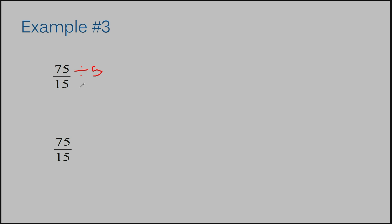We have seventy-five over fifteen. Let's try dividing by five. Seventy-five divided by five is fifteen. Fifteen divided by five is three. So seventy-five over fifteen is equivalent to fifteen over three — because I divided both the numerator and the denominator by five. This is an improper fraction, but that's not really our concern here; our directions told us to find an equivalent fraction, so that's what we did. If your directions were to say to make sure your fraction is in proper form, then you would make sure that it was not improper.